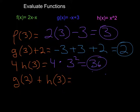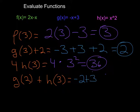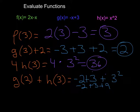Now the g of 2 function. I can also combine different functions — here I'm combining the g function and the h function. So g of 2 becomes negative 2 plus 3, plus the h function, which is 3 squared. Following your order of operations — don't forget to do that — that's negative 2 plus 3 plus 9, because we have to do the exponent first, and that simply becomes positive 10.